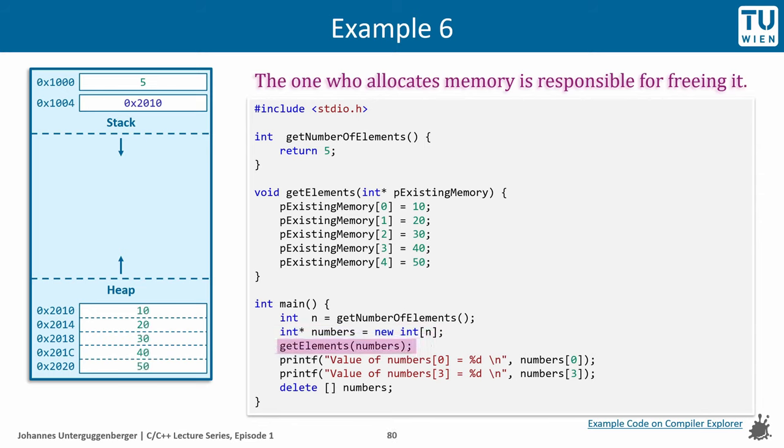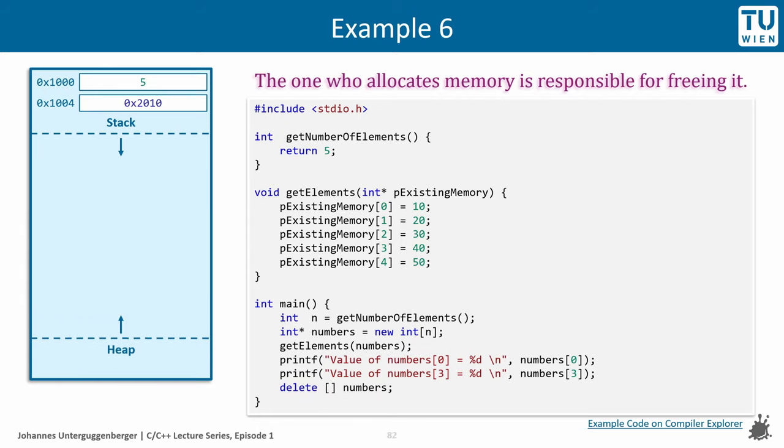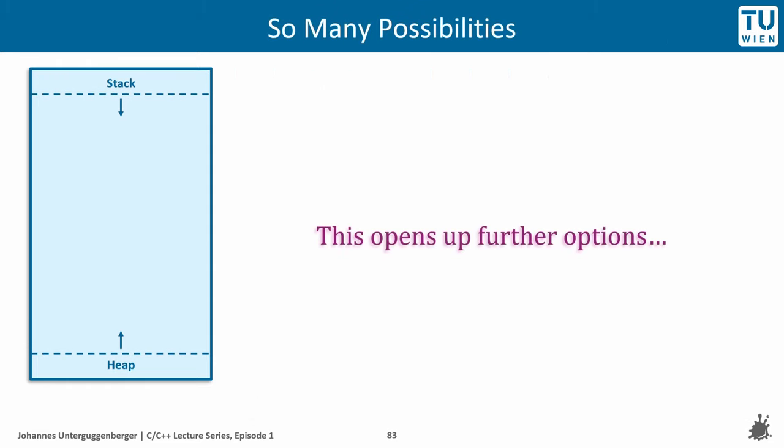In order to get the values of our elements, we now pass the pointer to our newly allocated memory to the function getElements, and getElements will fill it with its values. And here we see that this code obeys the memory allocation responsibility principle. The one who has allocated memory also deletes it.